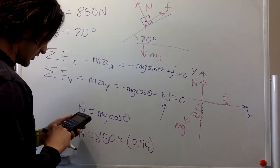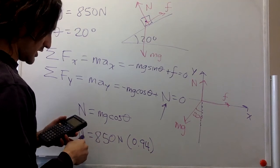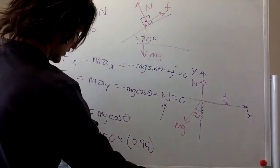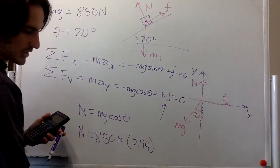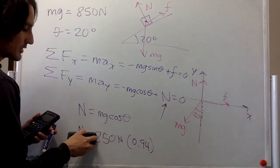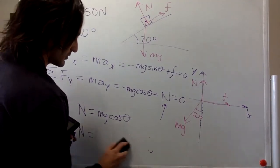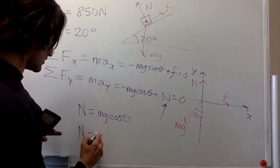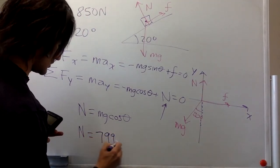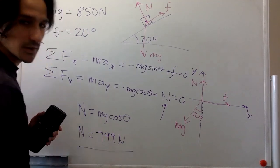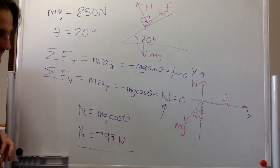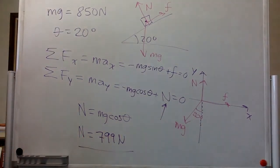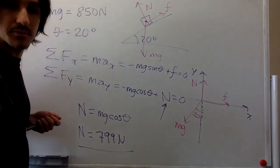So times the 850, we get 798.7. So let's say 789 newtons. And that is the answer to this problem. Thank you.